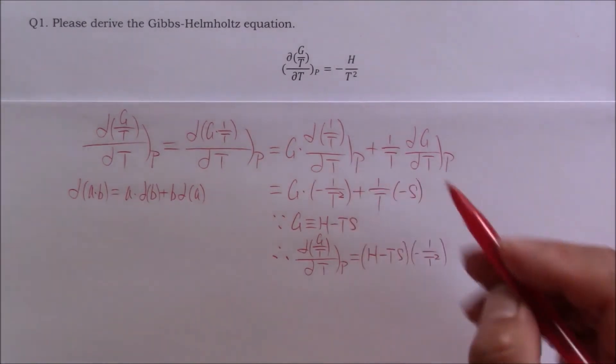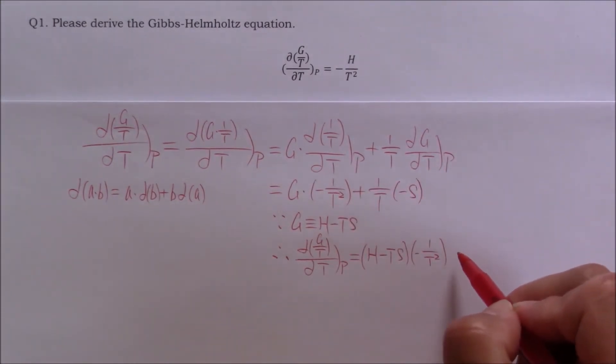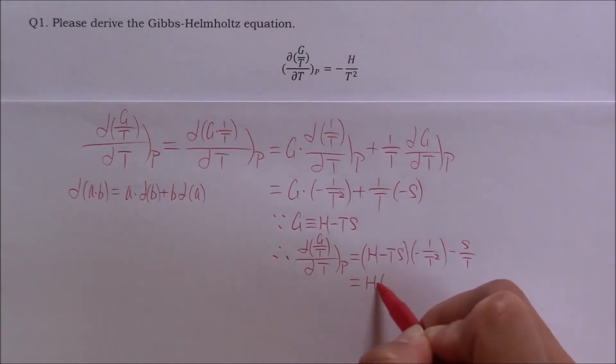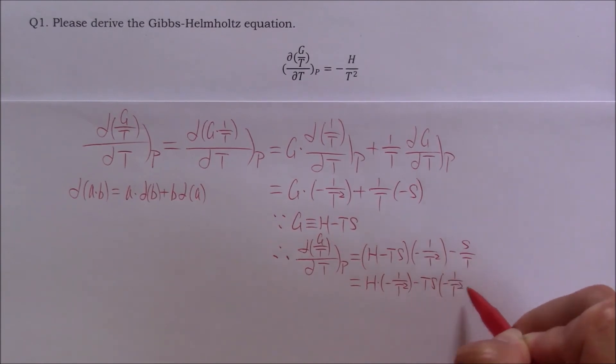This second term will become negative s over T. Let's separate this part into two terms. Let's write down this term in fraction format. T and T can cancel.